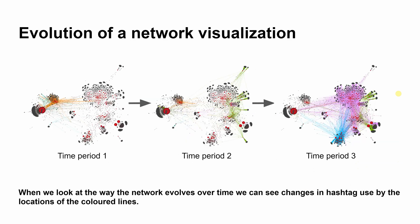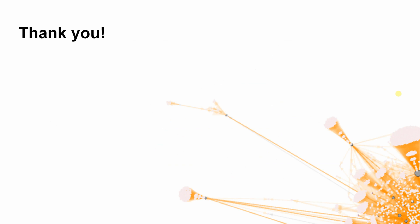Evolution of a network visualization: when we look at the way the network evolves over time, we can see changes in hashtag use by the locations of the colored lines. Thank you.